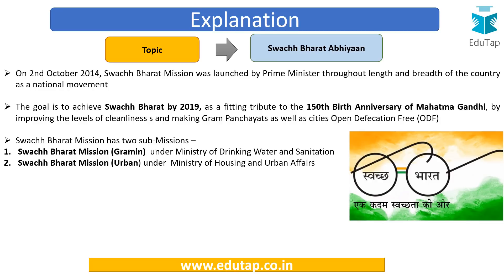On 2nd October, Swachh Bharat Mission was launched by Prime Minister Narendra Modi throughout the country as a national movement — not just a government responsibility. The goal was to achieve a Swachh Bharat by 2019, the 150th birth anniversary of Mahatma Gandhi, who was born in 1869. It has two sub-missions: Swachh Bharat Mission for Grameen, under the Ministry of Drinking Water and Sanitation, and SBM Urban, under the Ministry of Urban Development.